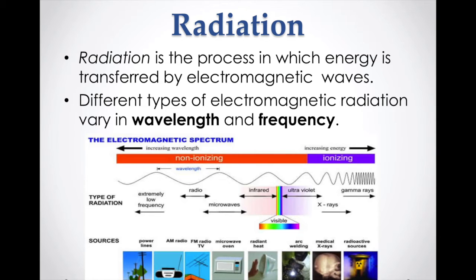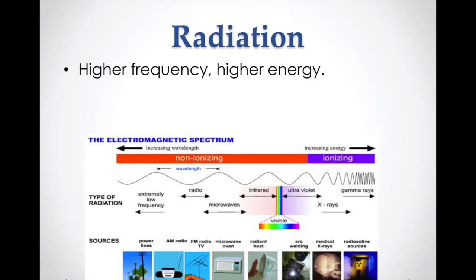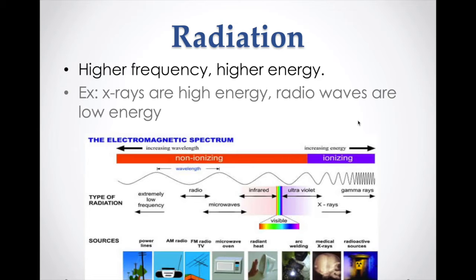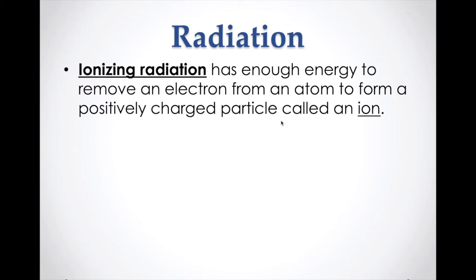As wavelength increases in one direction, frequency increases in the other direction, and as frequency increases so does the energy. Over on the high-frequency end is all the high-energy, dangerous stuff, whereas the low-frequency end is low-energy. What makes ionizing radiation special is that it has enough energy to take an electron out of an atom — if it hits an atom it can pop an electron out and create a positively charged ion.